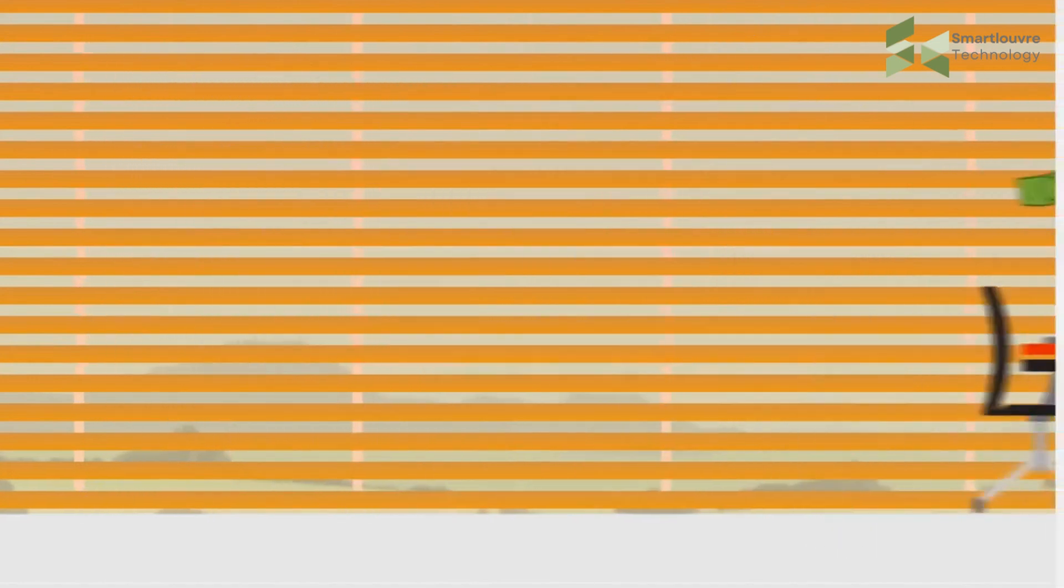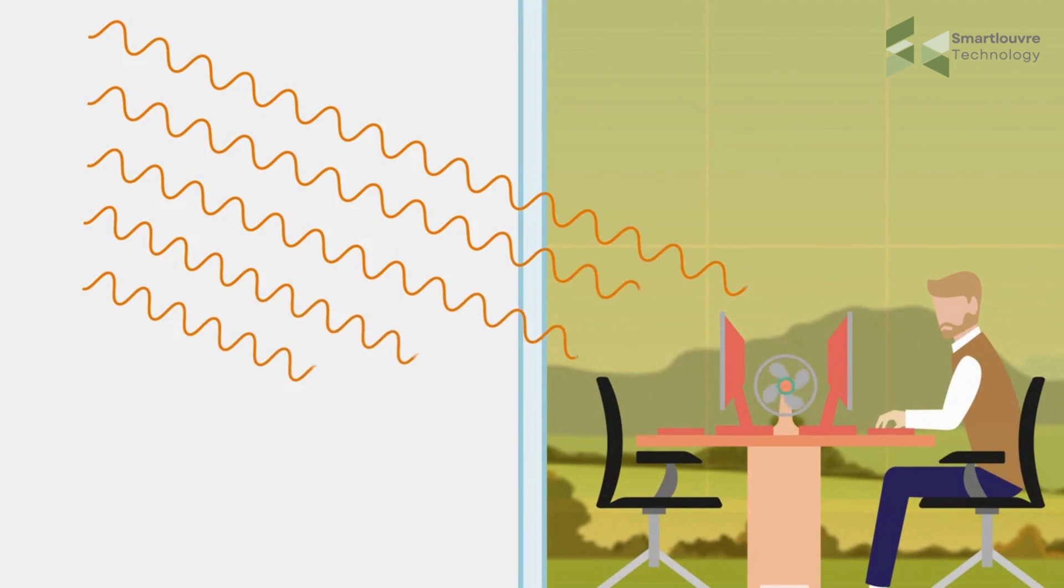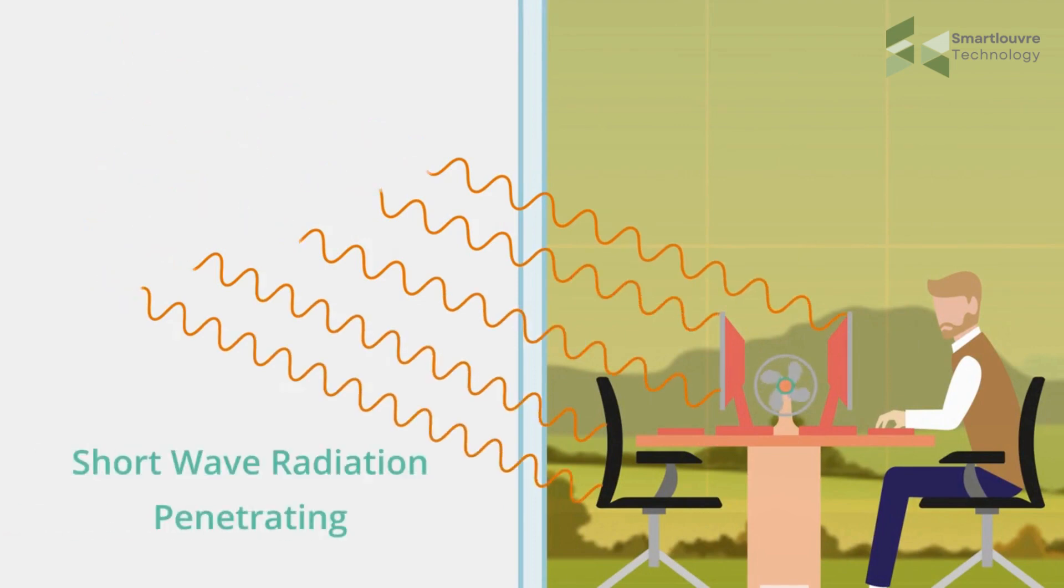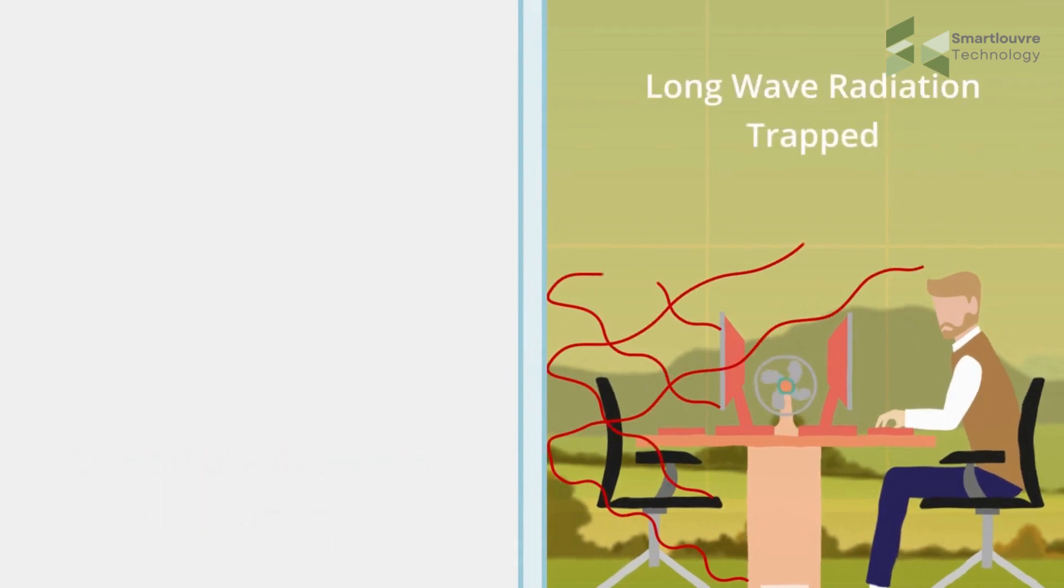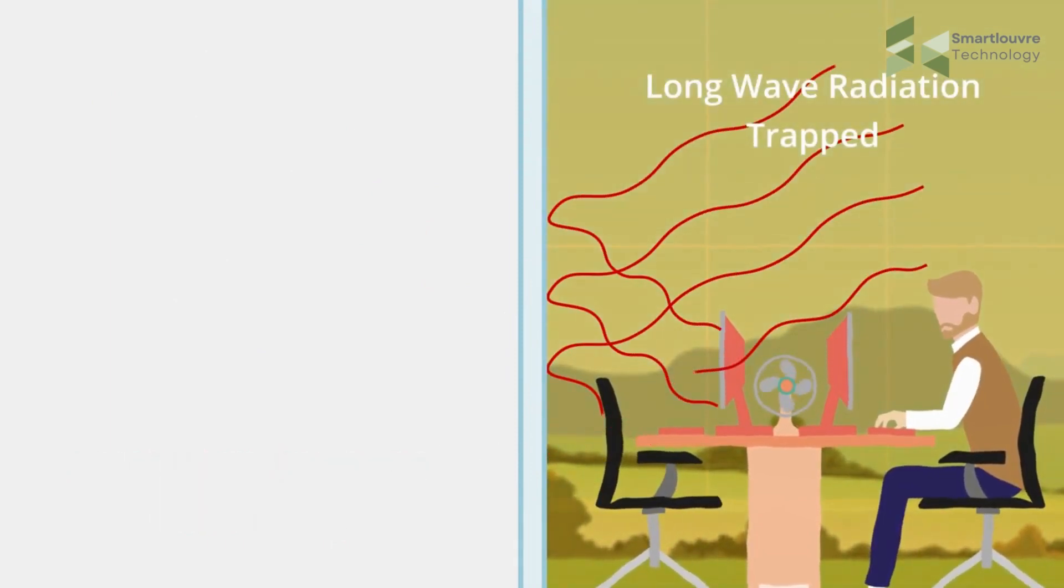Let's take a closer look. Solar energy streams in as shortwave radiation, easily passing through glass and heating everything inside. This heat re-radiates as longwave radiation, unable to escape back through the glass, causing heat to build up to unbearable temperatures—the greenhouse effect.